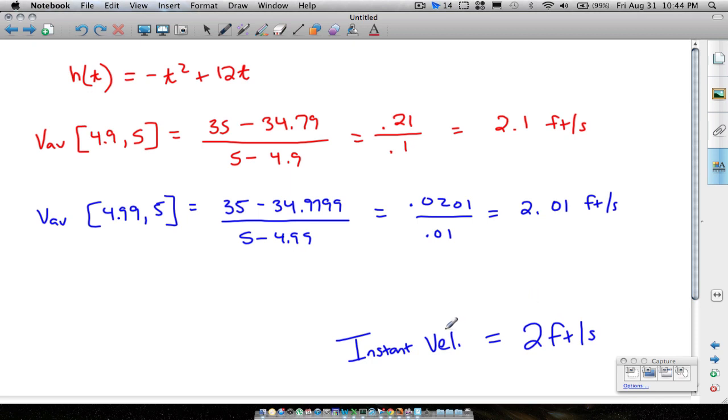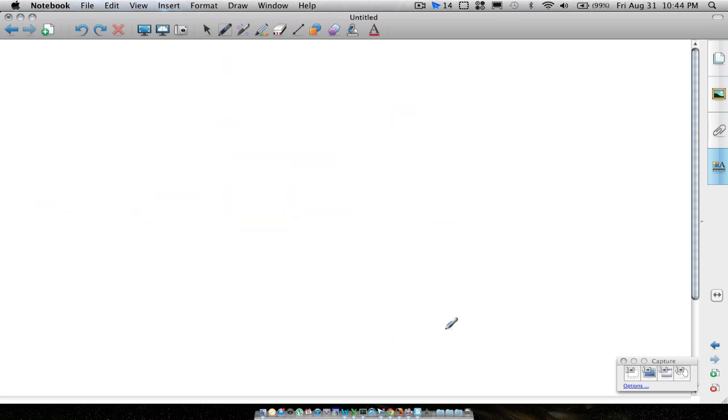Now, what's another way we can determine this? Let's find a formula. In our formula for average velocity, notice we always went to 5 seconds for this particular problem. Let's just use any value of t. So therefore, when we do that, we're going to take h of 5, that's our y2 minus y1, because our y1 values h of t, divided by x2, which is 5, minus x1, which is t.